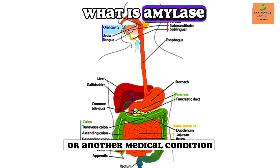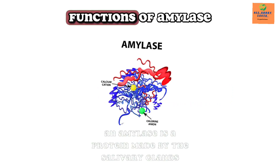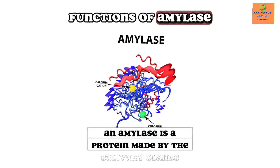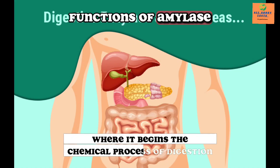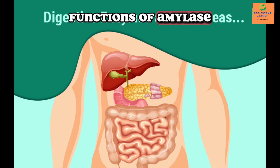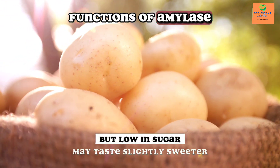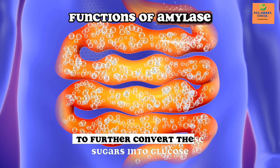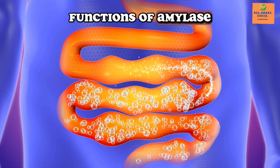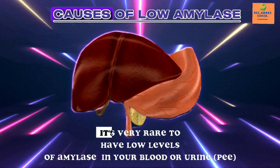What are the functions and uses of amylase? Amylase is a protein made by the salivary glands in and around the mouth of humans and some other mammals, where it begins the chemical process of digestion. Amylase converts some starch into sugar while chewing. Foods like rice and potatoes that are high in starch but low in sugar may taste slightly sweeter. The body then uses other enzymes to further convert these sugars into glucose, which is used as energy.